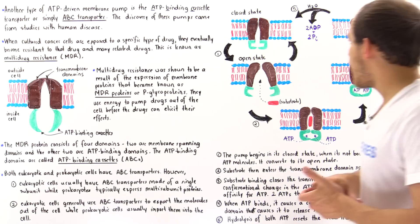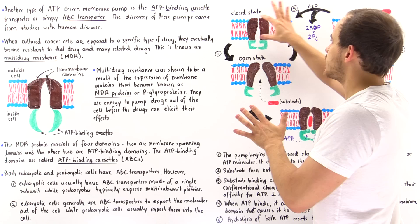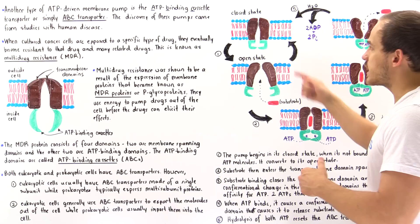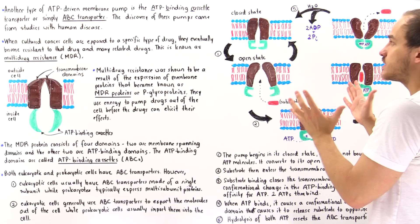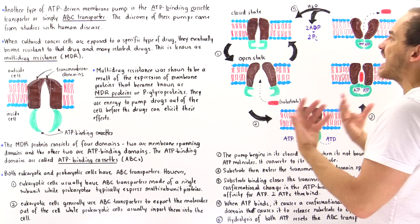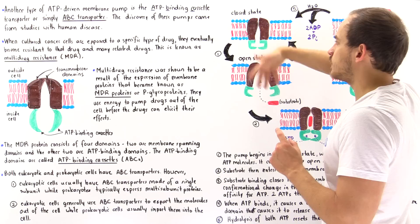There are essentially five different steps in this process. This diagram describes the transmembrane pump in its closed state, meaning substrate molecules cannot actually enter the molecule.